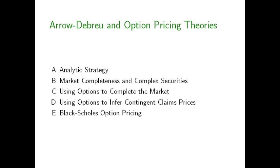In this second part of the presentation — parts C and D on the outline — we'll see exactly how Breeden and Litzenberger and Bonds and Miller did this, using options to make inferences about contingent claims prices. We'll proceed in two steps under heading C: first working through simplified, stylized examples with two or three states, then enriching the analysis to allow for many states — dozens or even hundreds — and seeing how we can use information embedded in option prices on stock indices like the S&P 500 to make inferences about contingent claims prices for the United States economy today.